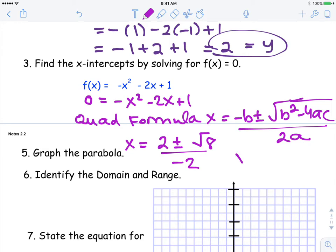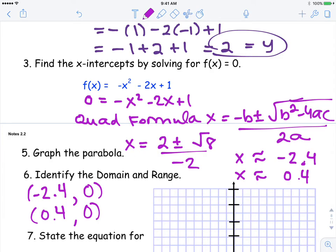So then what you need to do is you need to use your calculator and say two plus the square root of eight divided by negative two, and your calculator is negative 2.4. Then you do this again with your calculator. You're going to go two minus the square root of eight divided by negative two, and you're going to get approximately 0.4. We do need to write those as ordered pairs as such. So those are your ordered pairs for your x-intercepts.